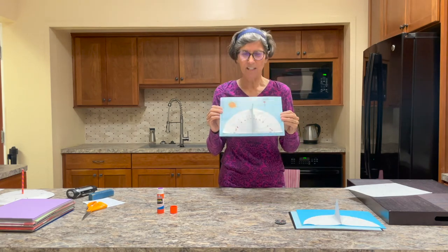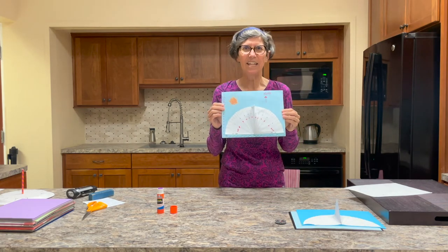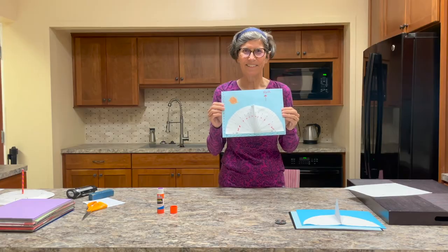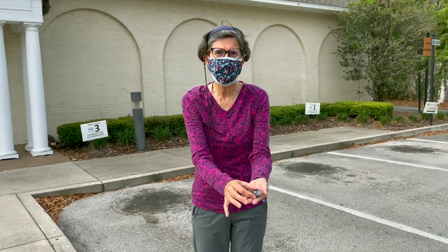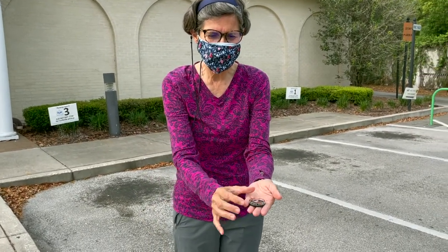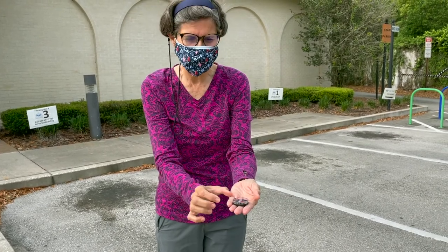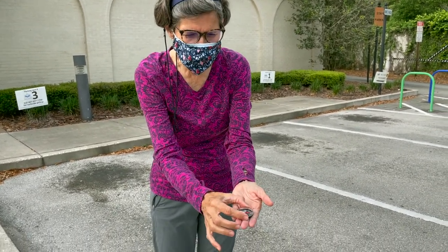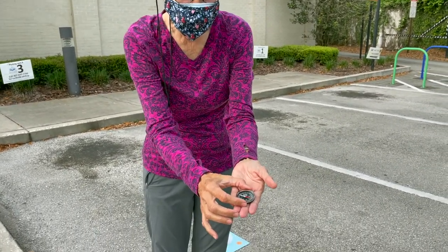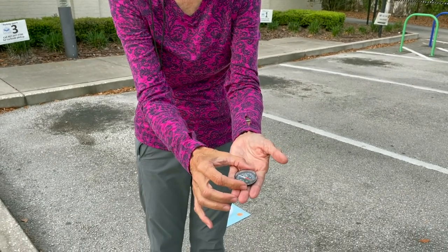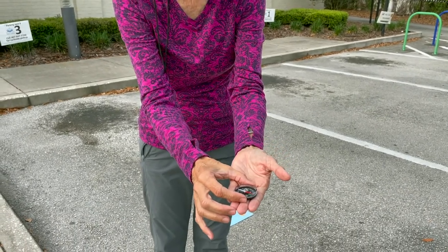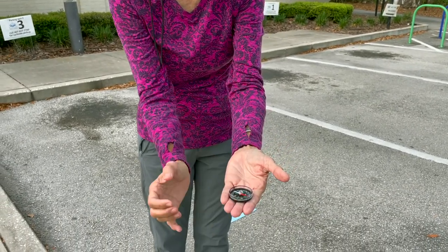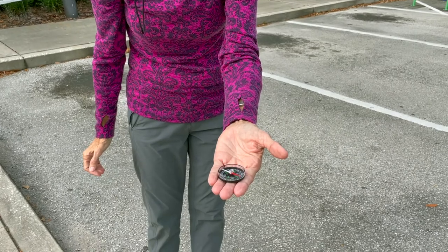At this point we can take it outside and see how it works. In your packet it includes a compass, and the way a compass works is the red dial is going to point to the north. You move your compass so that the red dial matches up with the end for north, and that way we'll know which way north is.